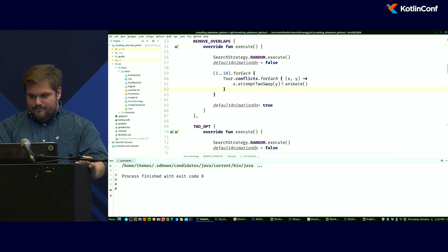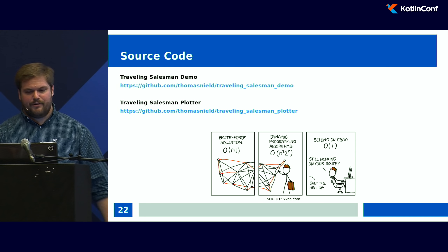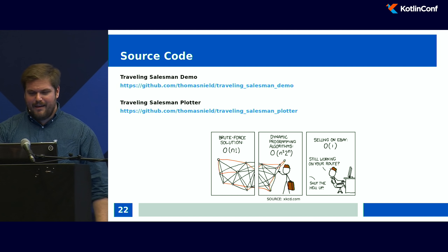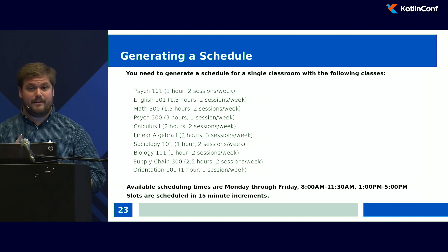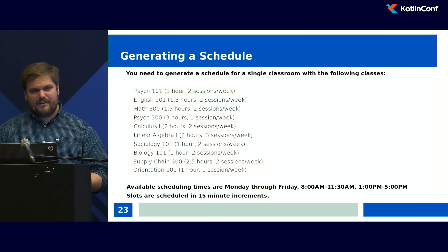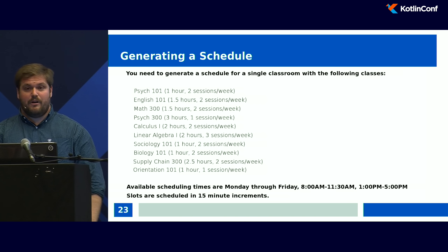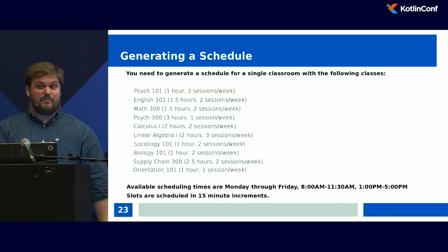The traveling salesman problem is actually very relevant and used as a benchmark for solving transportation problems and comparing different optimization algorithms. People have actually done research trying to use a neural network to solve the traveling salesman problem, but they got very suboptimal results — it's interesting academically but not something you want to use in practice.